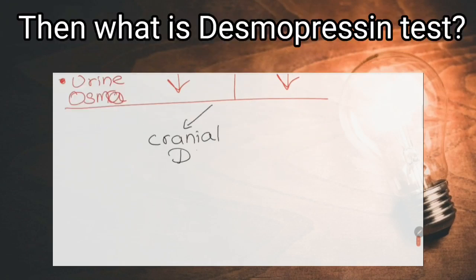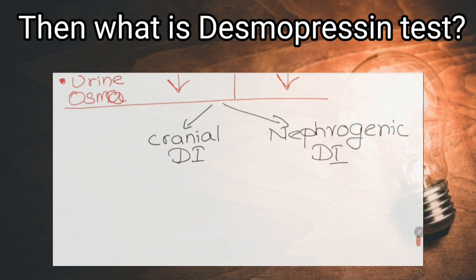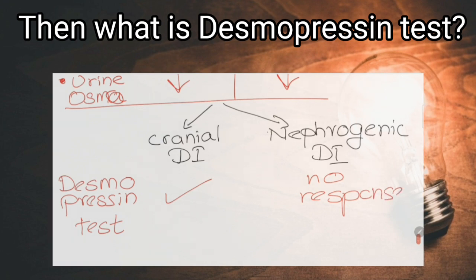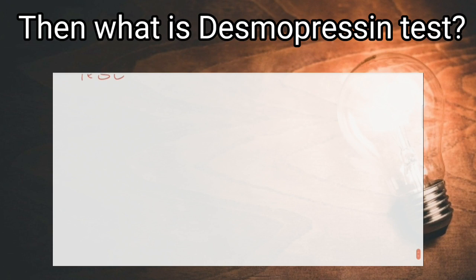What is the Desmopressin test? It is used to differentiate the two types of diabetes insipidus. The two types are cranial type and nephrogenic type. Cranial type diabetes insipidus is due to decreased production of antidiuretic hormone, so after administration of Desmopressin it will correct the clinical features because Desmopressin is an analogue for vasopressin. But patients with nephrogenic diabetes insipidus don't respond to Desmopressin, because in this condition the collecting ducts of the renal tubule fail to respond to antidiuretic hormone.